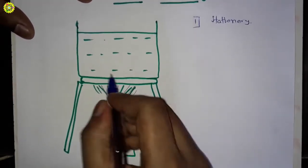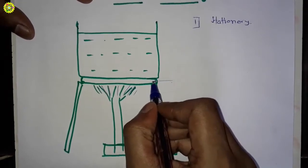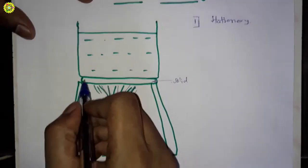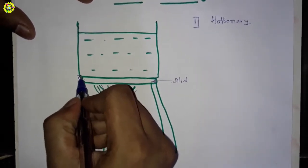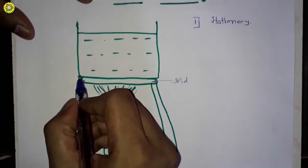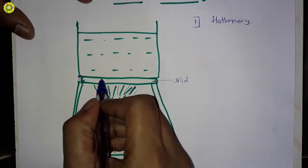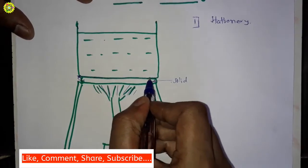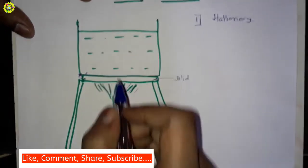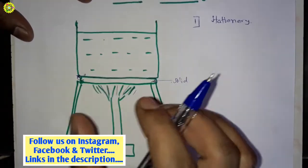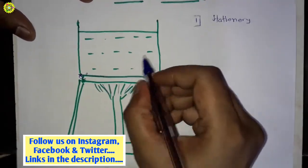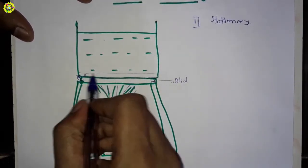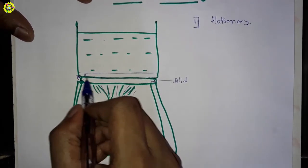Due to this flame, the solid surface gets heated, and it transfers heat to the solid surface of the container. Due to this, the surface of our container gets heated. This heated container surface transfers heat to the liquid water, and due to this, boiling starts.